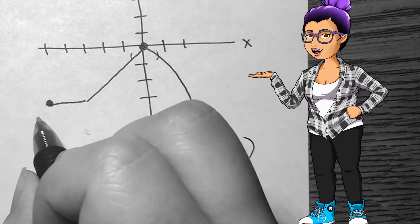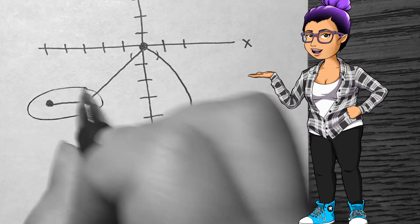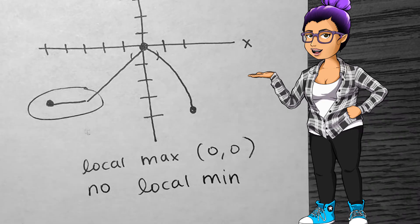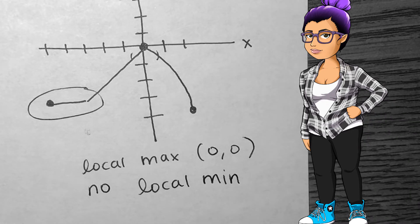This graph has a smallest output of about negative 3 on the shown interval, but since there's not an interval where this is smaller than everything else in it, there is no local minimum.